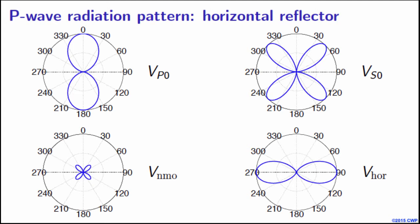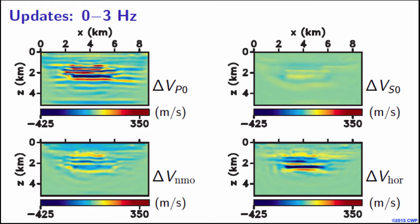So based on these observations, I once again put up the slide from the 0 to 3 Hz frequency range, where we have seen that the updates for Vp0 and V-horizontal were very large. The magnitudes were large. In the case of Vp0, we had updates that happened at shallow and deeper regions of the model. And we saw updates for a much larger lateral extent. But in the case of V-horizontal, the lateral extent kept decreasing as we went deeper down. And something similar for VNMO, except that even the amplitudes of the updates in the case of VNMO were smaller.